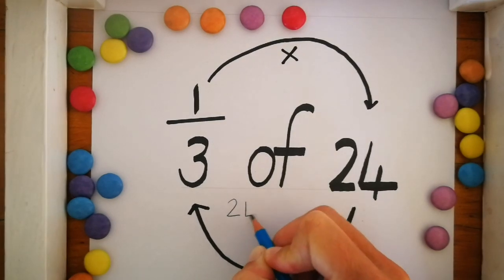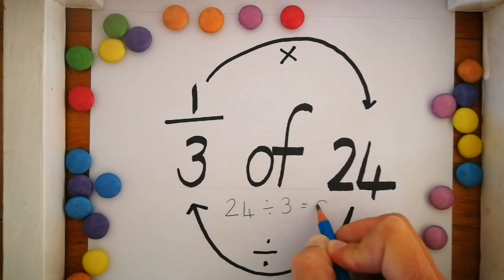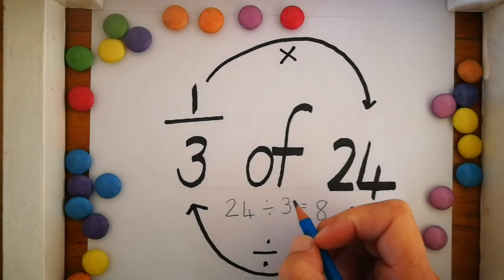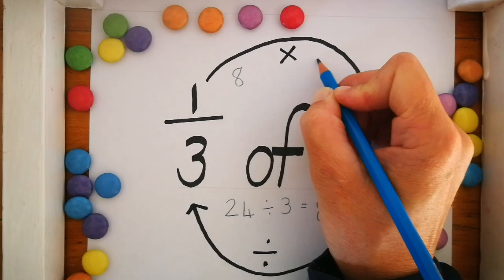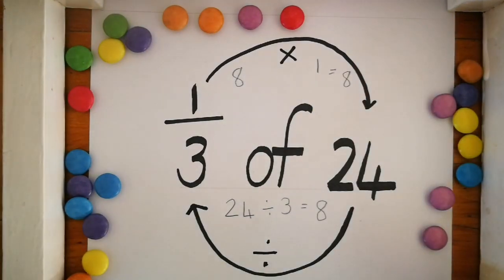24 divided by 3 equals 8. And then 8 times 1 equals 8. That's how we work out how many Smarties they'll get. They're each going to get 8 Smarties.